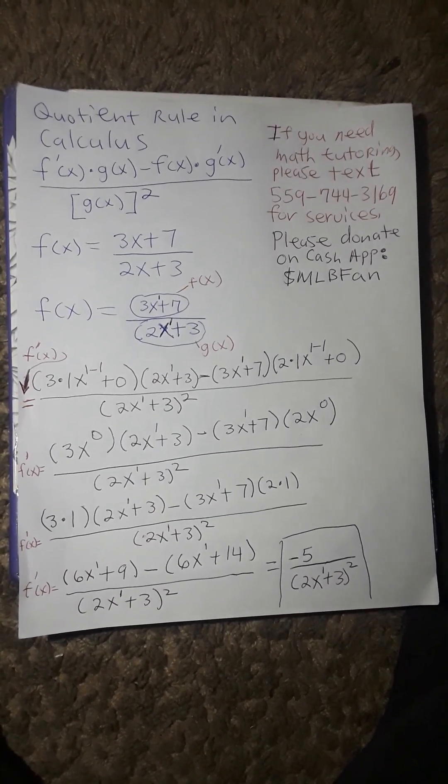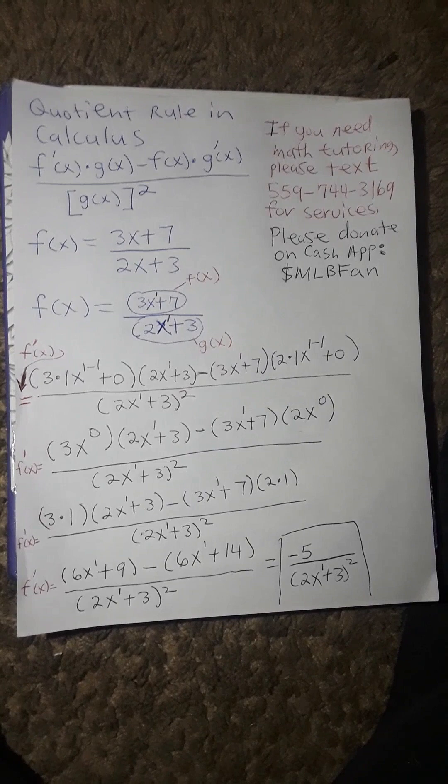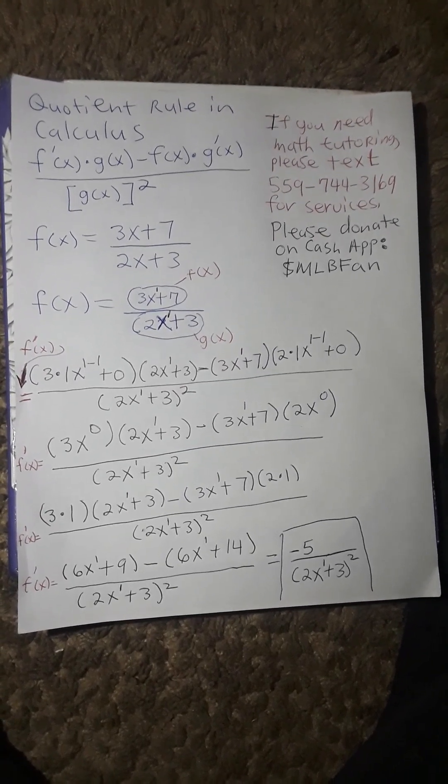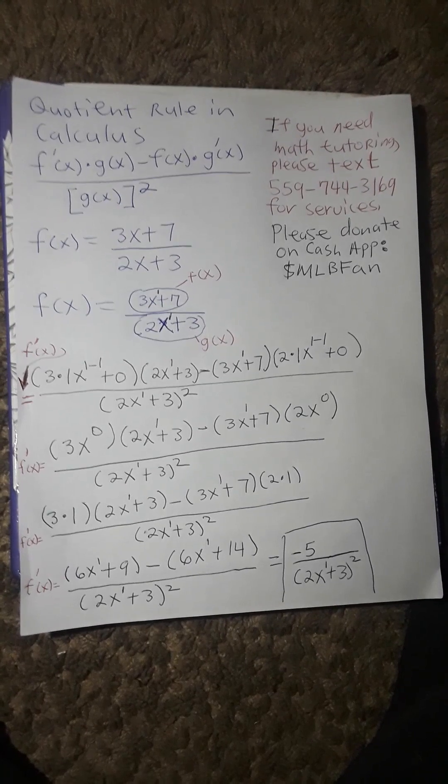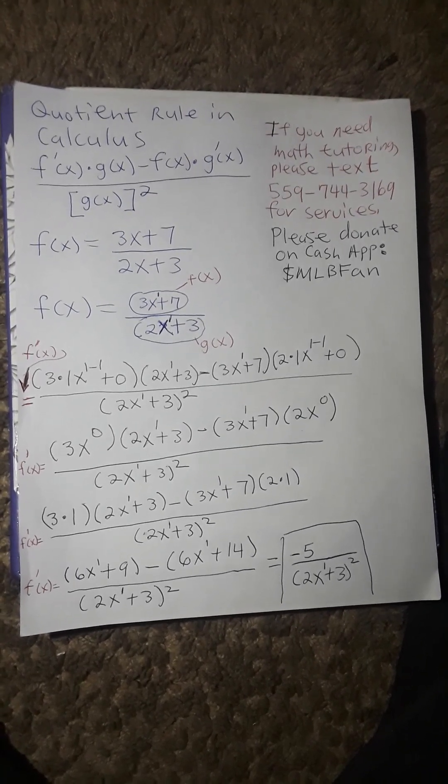f prime of x is going to equal 6x to the 1 plus 9 minus 6x to the 1 plus 14 divided by 2x to the 1 plus 3 squared.